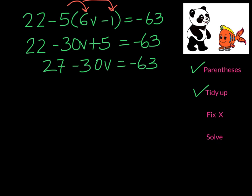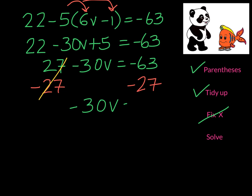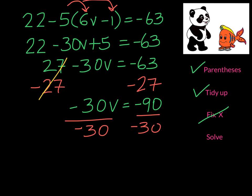We don't need to fix x because we only have one variable in this equation. So we proceed to solve. We'll subtract 27 from both sides. On the left-hand side we are left with negative 30v, and on the right-hand side we have negative 90. At this point we divide by negative 30 on both sides. On the left-hand side we are left with 1v, and on the right-hand side we are left with 3.